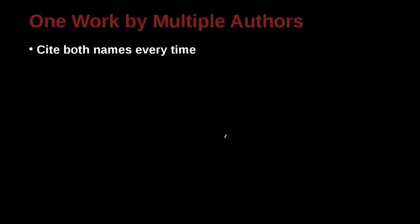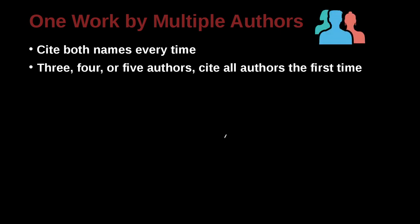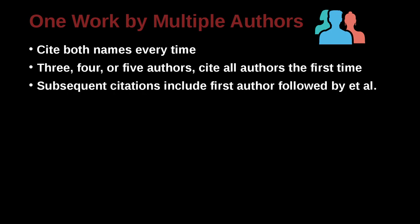What about a work, a journal, or a book that's by more than one person? If there's three, four, or five authors, then the first time that you cite this, you need to include all of the authors. However, the second and following times you cite that, you can include just the first author followed by et al., which means 'and others.'